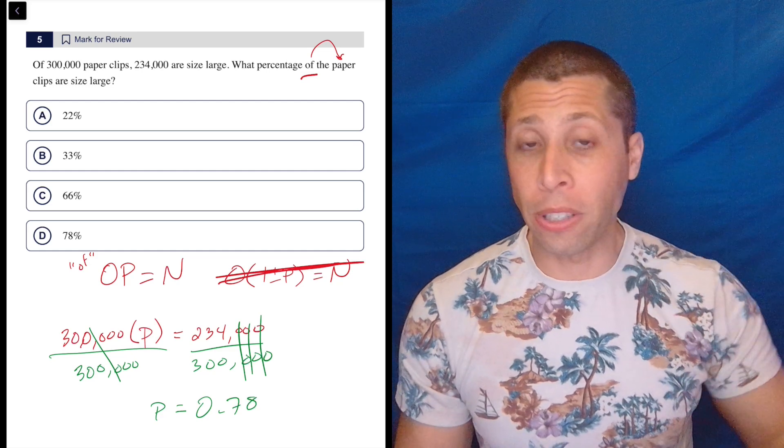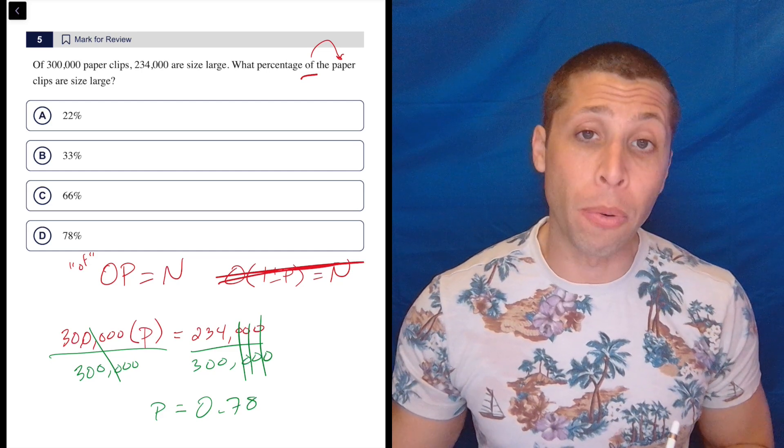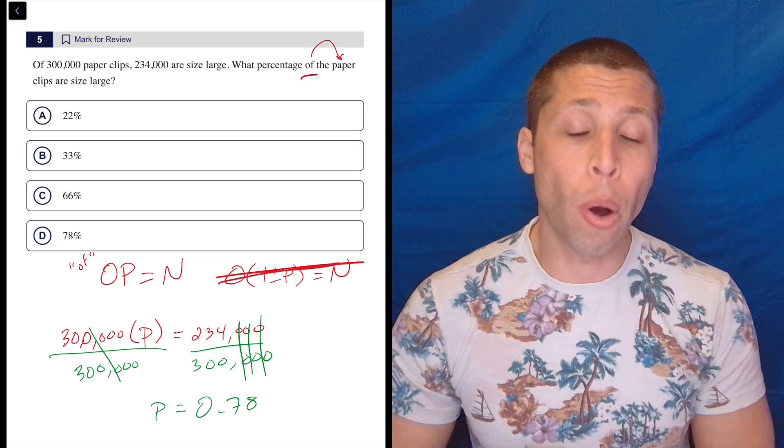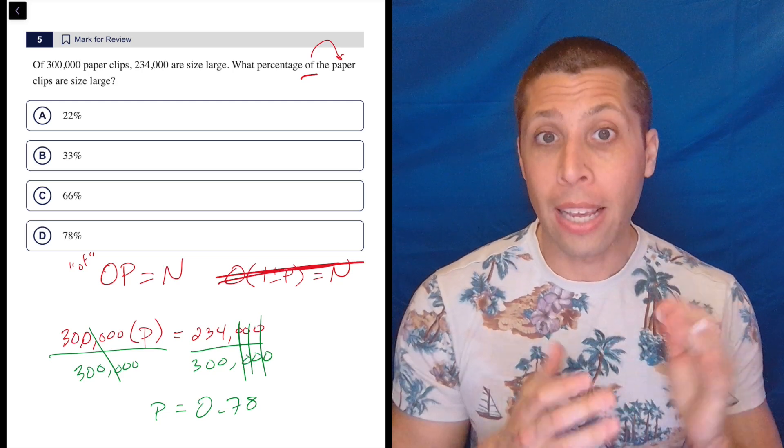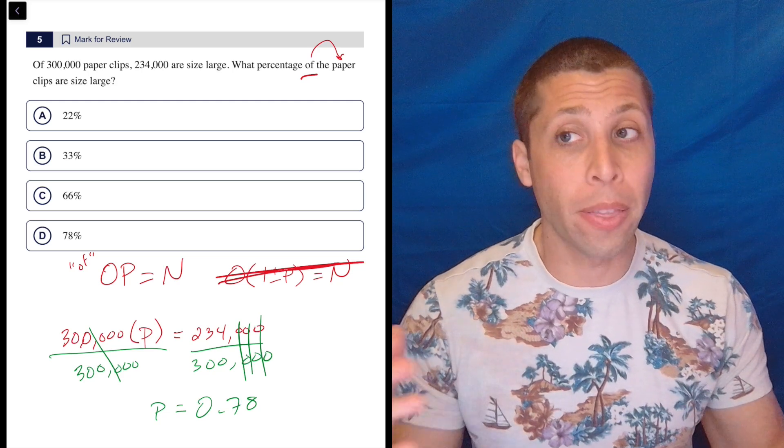And here we also see something that's important to remember about these open formulas: the P, the percentage, is going to look like a decimal in the formula. That's very common in math, that the percentage is used in our calculations as a decimal.